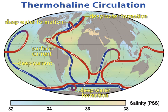Oceanic heat content refers to the heat stored in the ocean. The changes in ocean heat play an important role in sea level rise because of thermal expansion. Ocean warming accounts for 90% of the energy accumulation from global warming between 1971 and 2010.